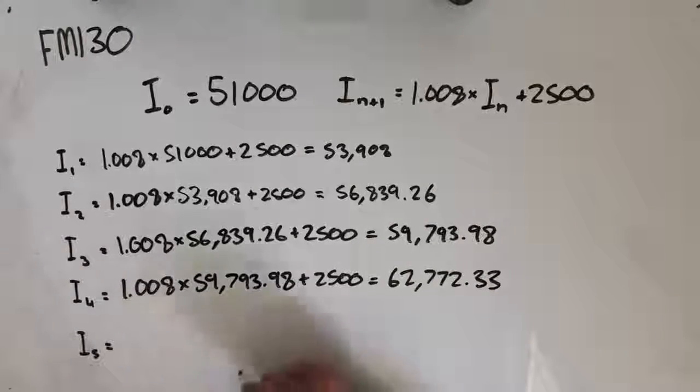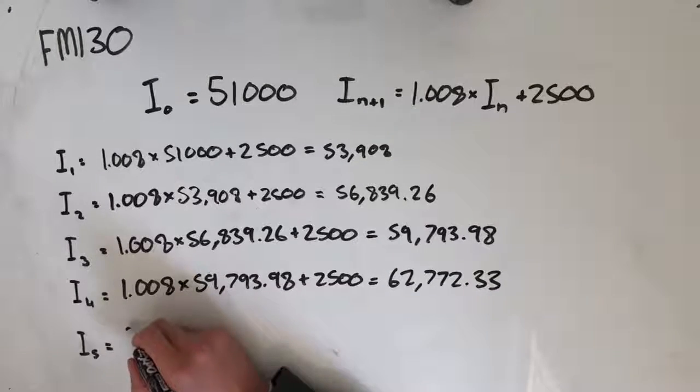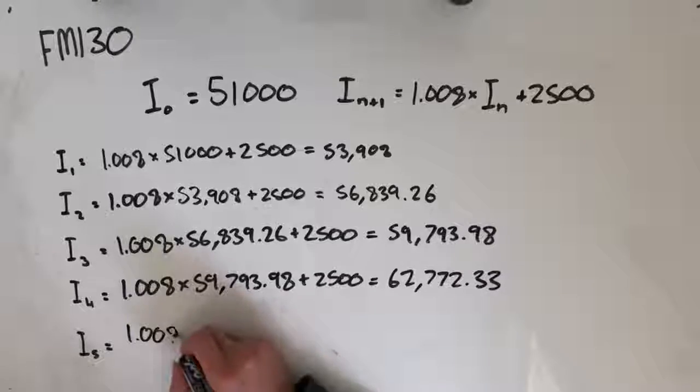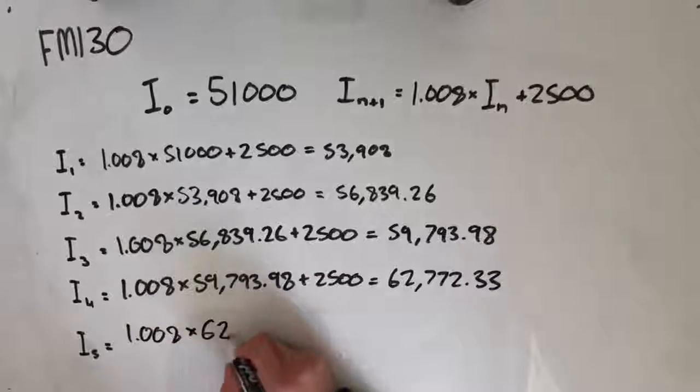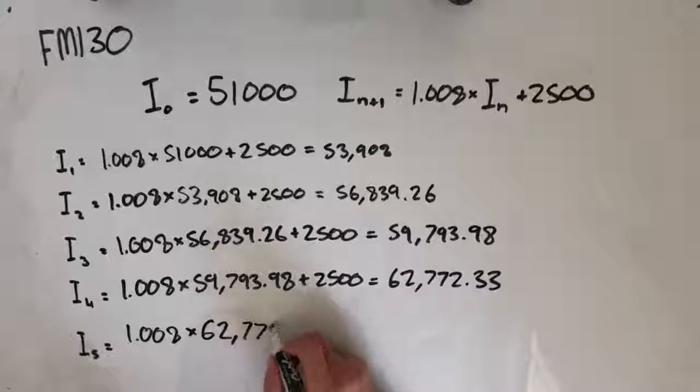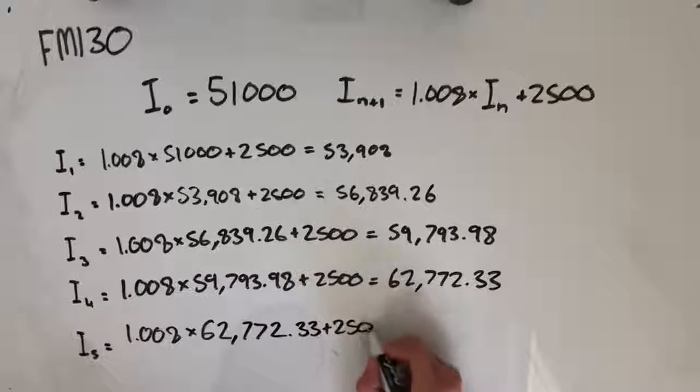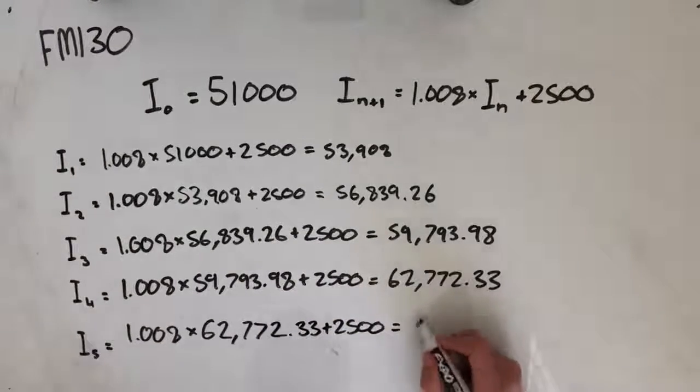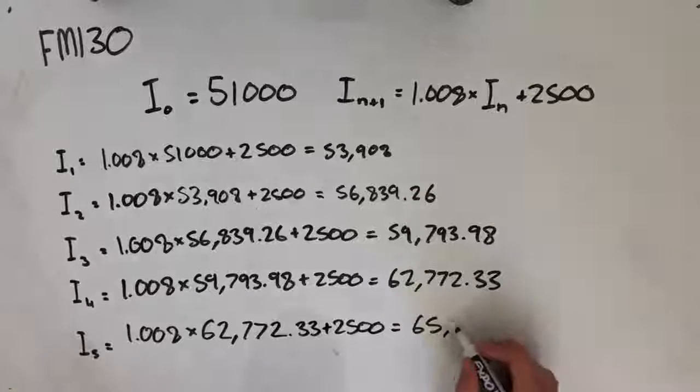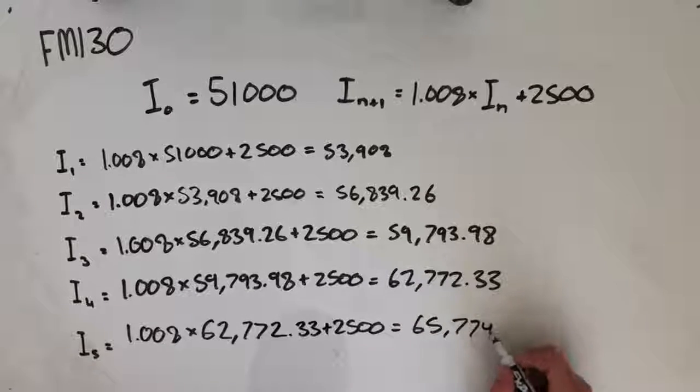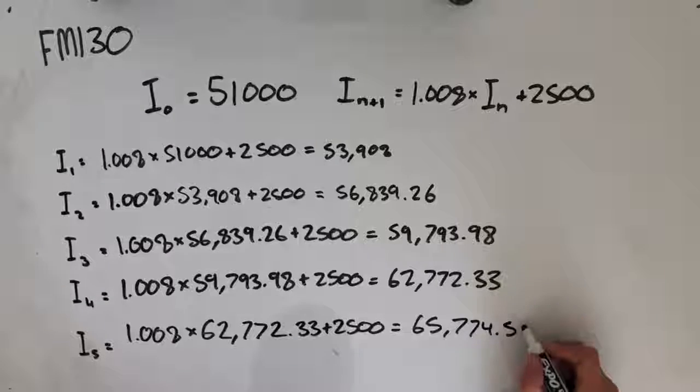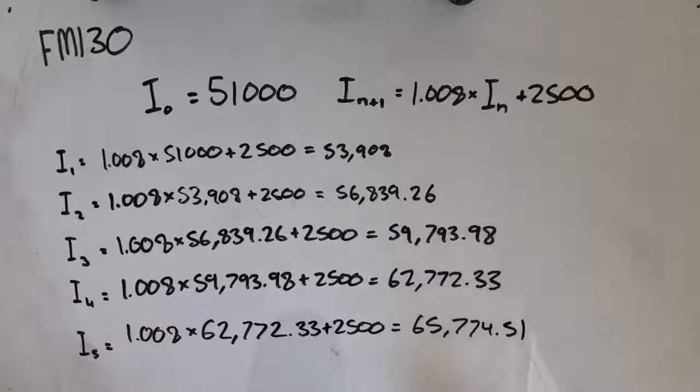And now for the final step, we go at 1.008 times our number from before, 62,772.33, plus 2,500. That's going to give us a final answer that rounds to $65,774.51.